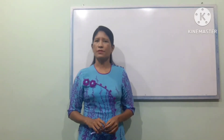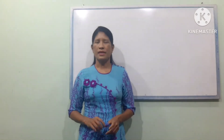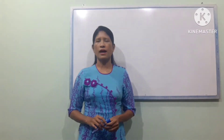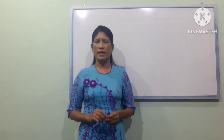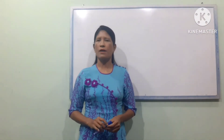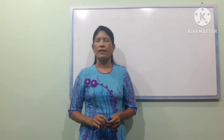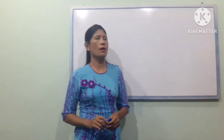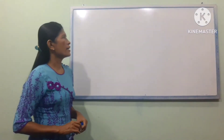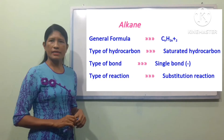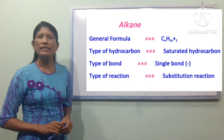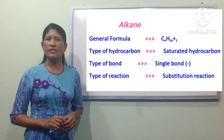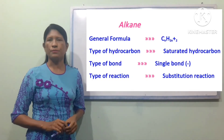Hydrocarbons are the same as carbon and hydrogen in the same way. So we can see alkane in the same way. Alkane is the same as CnH2n+2.